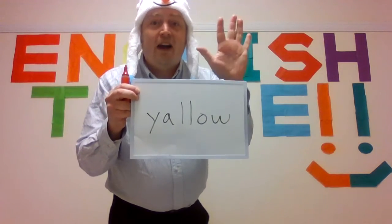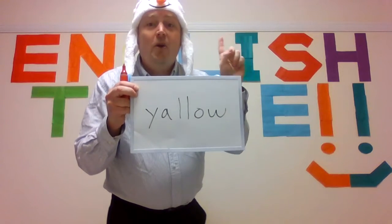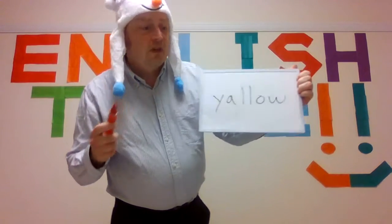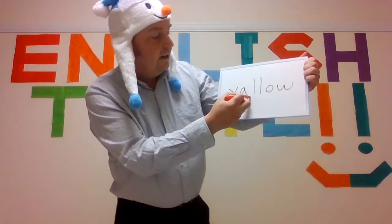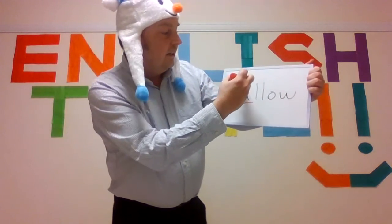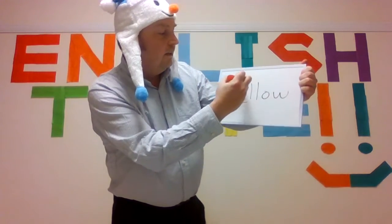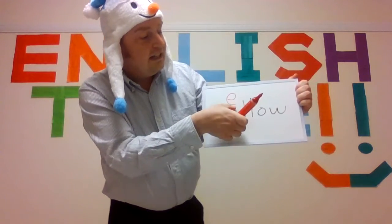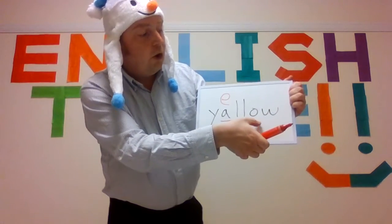The next one — yellow. Five seconds: five, four, three, two, one. Did you find the wrong letter? The wrong letter is A. You should have E. Let's spell together: Y, E, L, L, O, W — yellow. Very good.